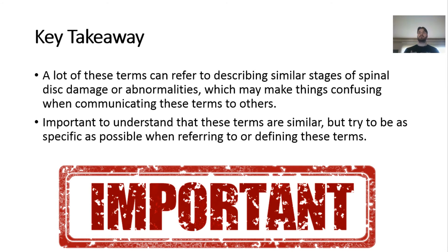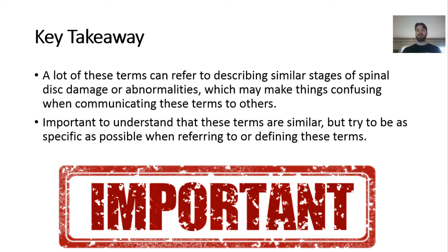That leads to the key takeaway: a lot of these terms are very similar and can get confusing. If you're referring to a bulge — are you defining it as the nucleus moving through maybe the 10th layer of the annulus? And if you're defining a protrusion, is it a contained herniation only going to the outer portion of the annulus? All these terms are very similar and can refer to the same things depending on how an individual clinician, doctor, or researcher defines them.